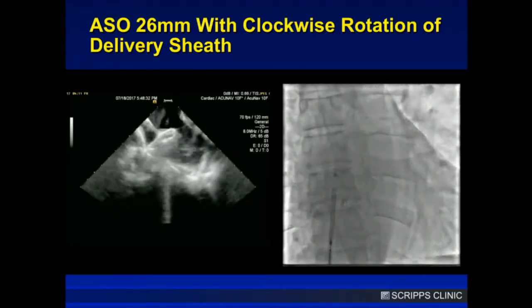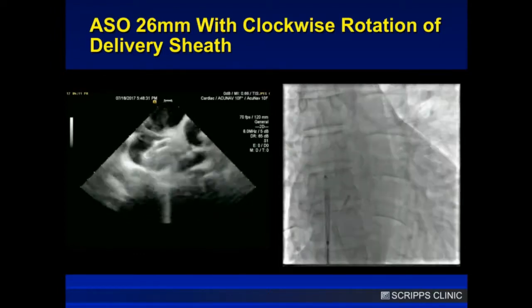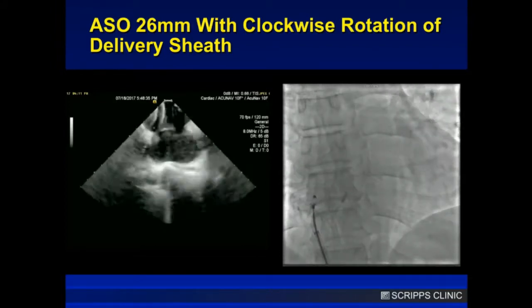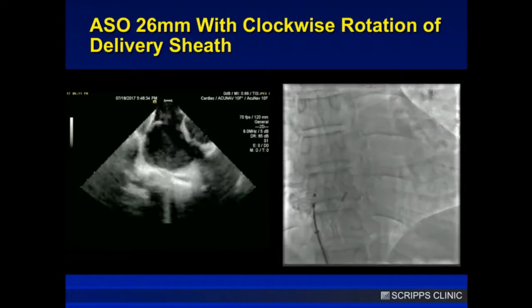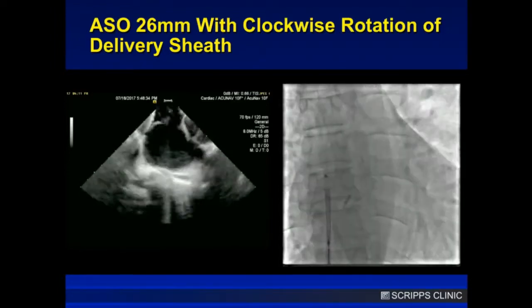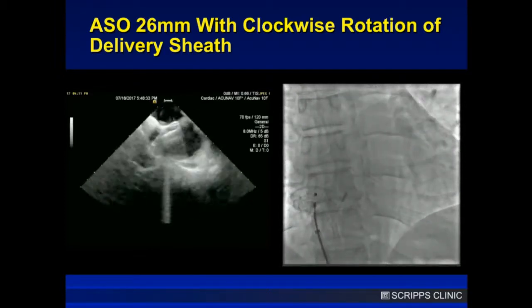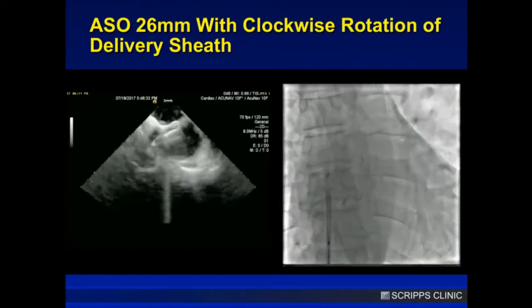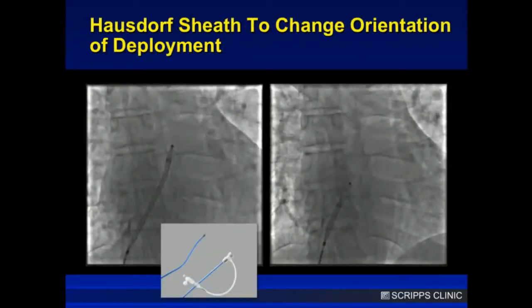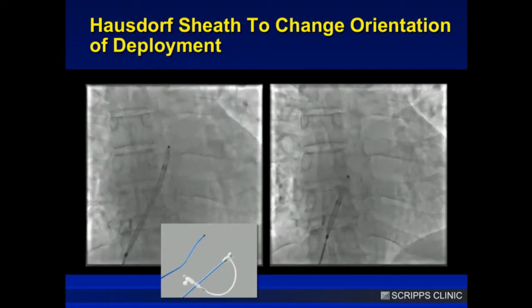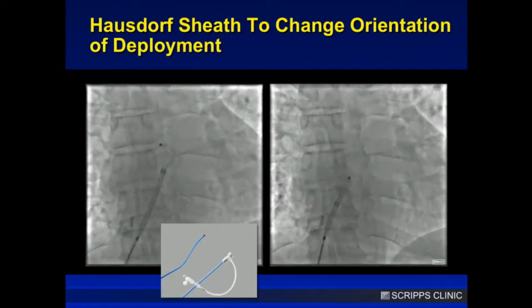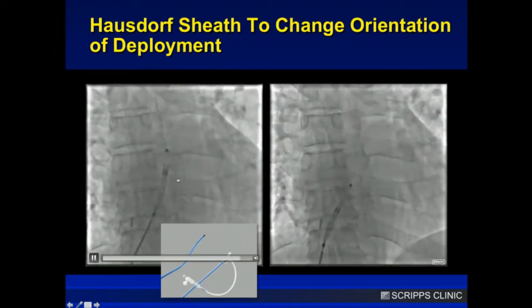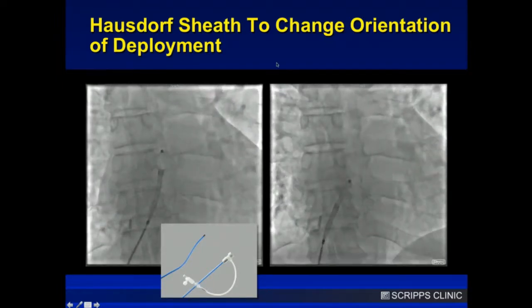I used to use an SL2 sheath in this scenario — SL2s were terrific, bringing you around orthogonal to the septum. But St. Jude, now Abbott, no longer makes the SL2 sheath. Bayless makes an SL2 equivalent, but only in 8.5-French, which would not suffice for this large occluder. There's also the Hausdorff sheath, which has an extra angle to bring you orthogonal on its own. I tried it with additional clocking, but pulling it back, the disc just falls right through again. No go.